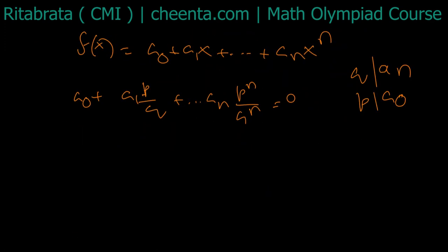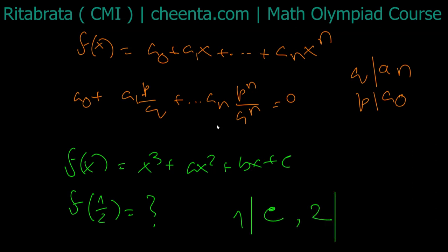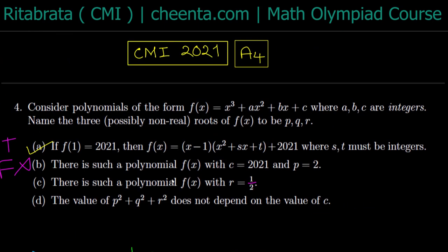Here I have f(x) = x³ + ax² + bx + c. Can f(1/2) be zero? If f(1/2) = 0, then 1 divides c, that's fine. But 2 divides the leading coefficient, which is 1 here. That means 2 divides 1, and this is clearly absurd. So part (c) is also false.